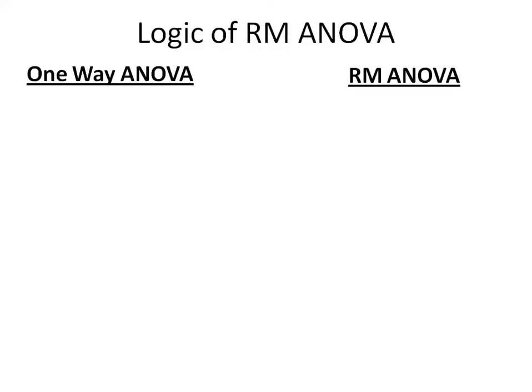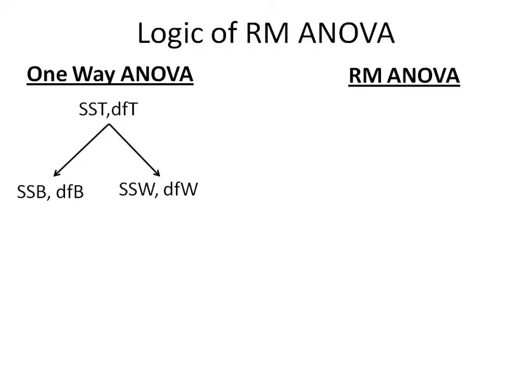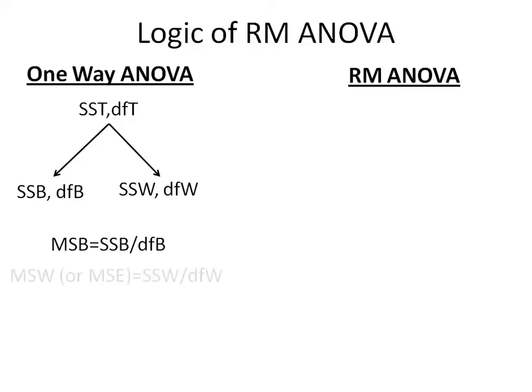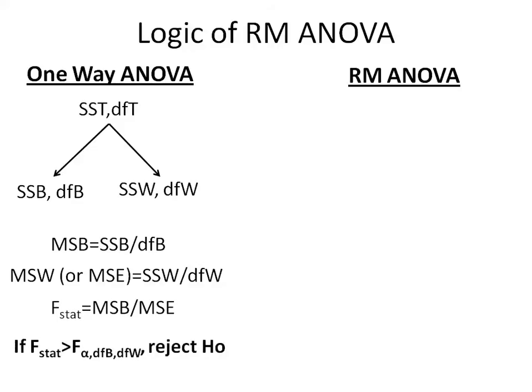Looking at the logic of a repeated measures ANOVA, we'll compare it to a one-way ANOVA, and you'll see it's not actually that different — just one extra step involved. As a review, the sum of squares total and its associated degrees of freedom can be split into within and between values, and for both within and between, you can calculate a mean sum of squares. You then use that to calculate an F statistic, and if the F statistic is greater than an F critical value, you reject the null hypothesis. Repeated measures ANOVA starts out the exact same way, with the same equations for these three values.